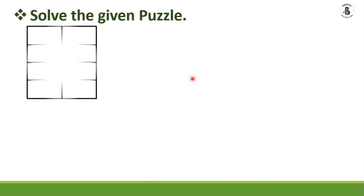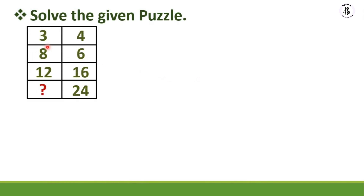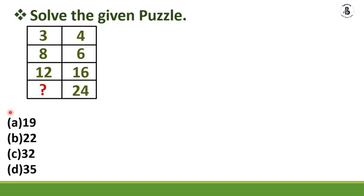Solve the given puzzle based on this number sequence: 3, 4, 8, 6, 12, 16, and you should find the missing number before 24. The options are: Option A: 19, Option B: 22, Option C: 32, Option D: 35.